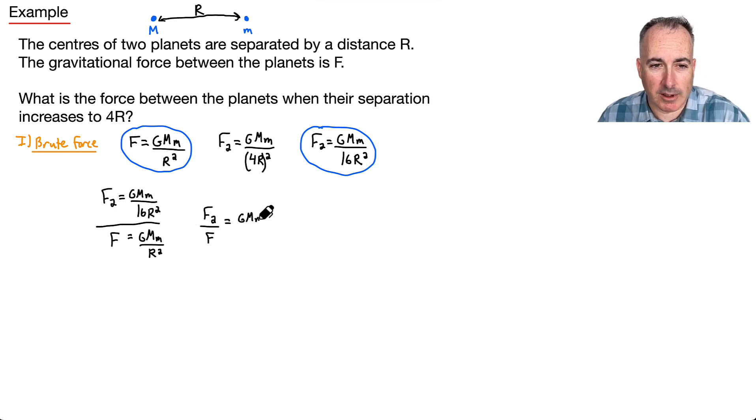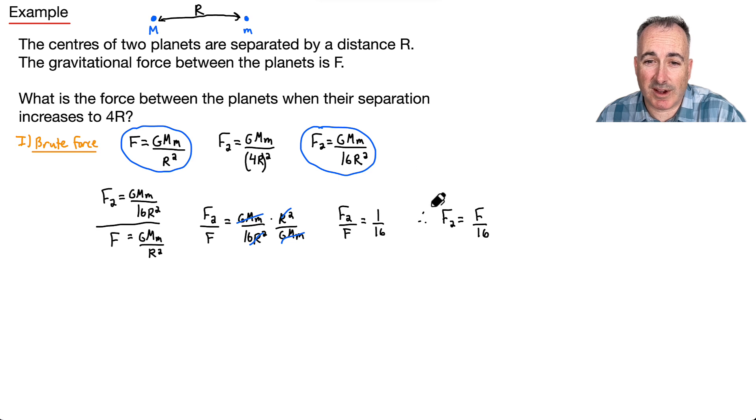Now what happens when you divide a fraction by a fraction? You can multiply by the reciprocal. The top one is still GMM over 16r squared, but then I multiply that by r squared over GMM. You'll see a miracle occurs: the GMMs cancel out, the r squareds cancel out, and I end up with just F2 over F equals 1 over 16. Therefore the new force is just F over 16. In other words, the force is one-sixteenth what it was before, so this is my final answer.